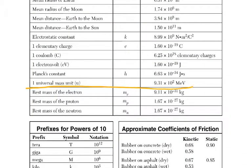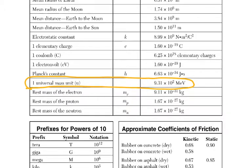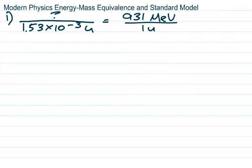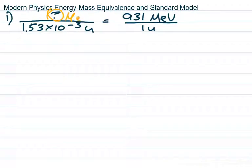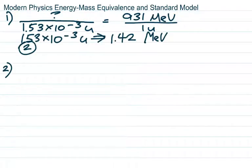Here it is: one universal mass unit is 931 mega electron volts. So we just need to say how many mega electron volts is 1.53 times 10 to the negative 3 universal mass units, if 931 mega electron volts equals one universal mass unit. Using the classic conversion setup — x over what we have equals the conversion on the right side with the same units — we cross multiply and solve for x. So 1.53 times 10 to the negative 3 universal mass units is 1.42 mega electron volts. That is choice 2.